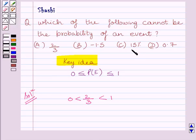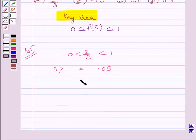Now, let us consider 15 percent. Now, 15 percent is equal to 0.05 and we know 0.05 is greater than 0 and less than 1. So it satisfies this condition or we can say 15 percent is less than 1 and greater than 0. So, 15 percent can be the probability of an event.